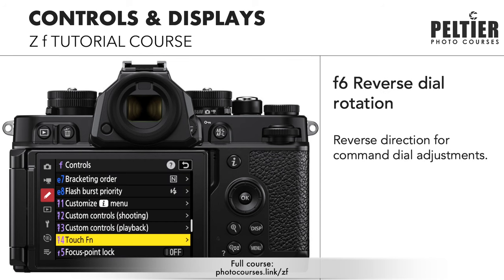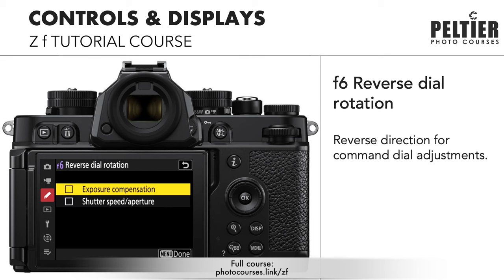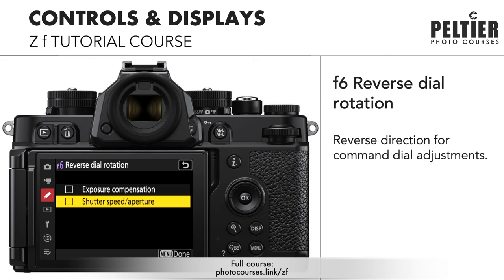Looking at some other custom settings: F6, reverse dial rotation. If you have this on, it will reverse the command dial directions when using the command dials for exposure compensation and/or shutter speed and aperture.